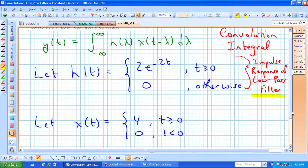We have this amplitude of 4 for non-negative values of time as the input to this low-pass filter.